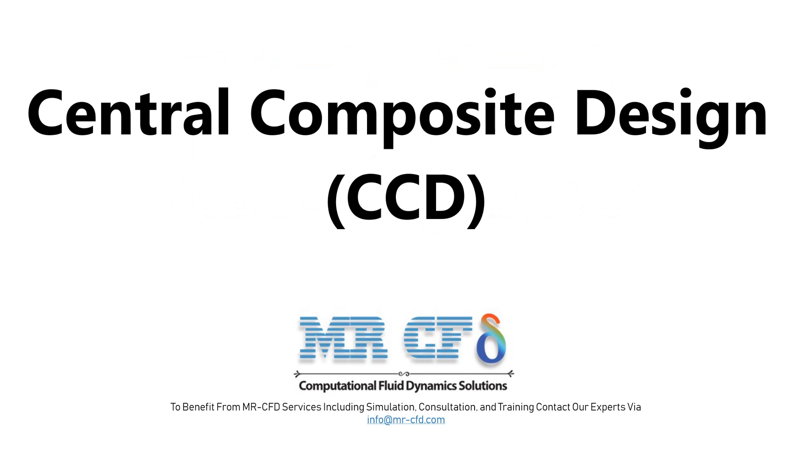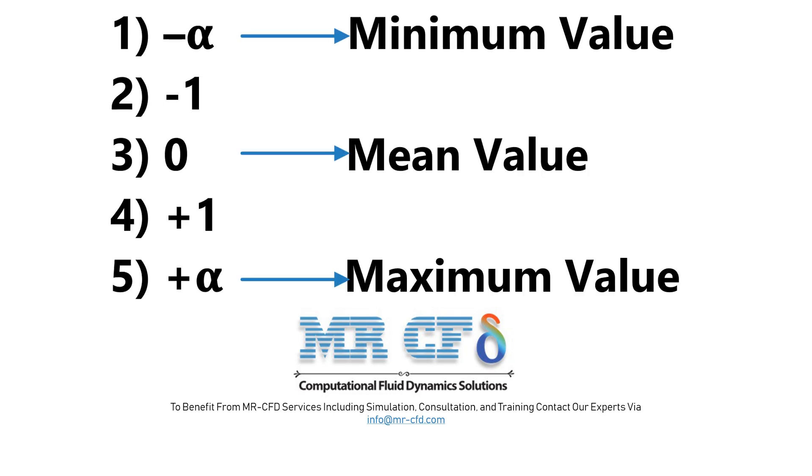The Central Composite Design model or CCD has five levels for dividing the various modes of input factors or parameters. The five levels include negative alpha, minus one, zero, one, and alpha, where level positive alpha and negative alpha are equal to the maximum and minimum values of the input parameter respectively, and level zero is equal to the mean value of that parameter.